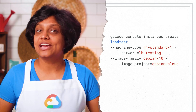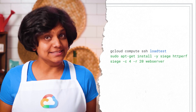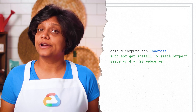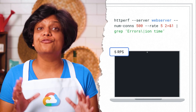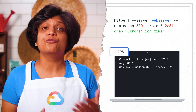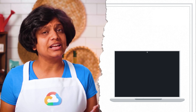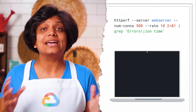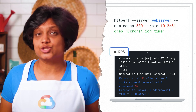Create a second VM in the same zone called load test. Then SSH into the load test instance and install Siege and HTT Perf. Try a request to run 20 requests from four parallel users — you should get an output of about 5.05 requests per second. Using HTT Perf, run 500 requests at the rate of four requests per second and repeat it at different rates, like 5, 7, and 10 requests per second. You will see that the system can handle five requests per second, and then drastically jumps in response time and connection errors when you have seven or 10 connections per second.